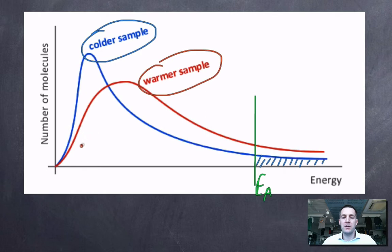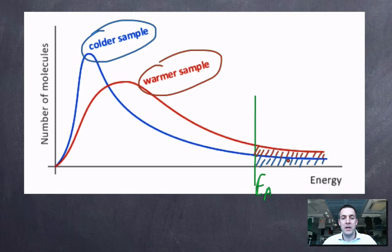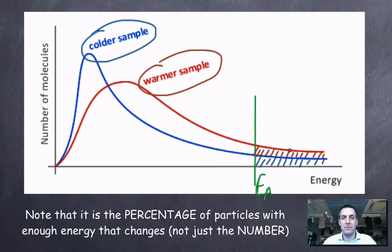If I warm the sample up, what happens to the kinetic energy of the particles? The average kinetic energy increases, and moreover there'll be more particles with higher kinetic energies — meaning more particles with enough energy to react, or to exceed the activation energy. I can show that on this graph by shading the area under the curve to the right of EA for the higher temperature. The total shaded area is bigger than at the lower temperature because the kinetic energy of particles has increased.